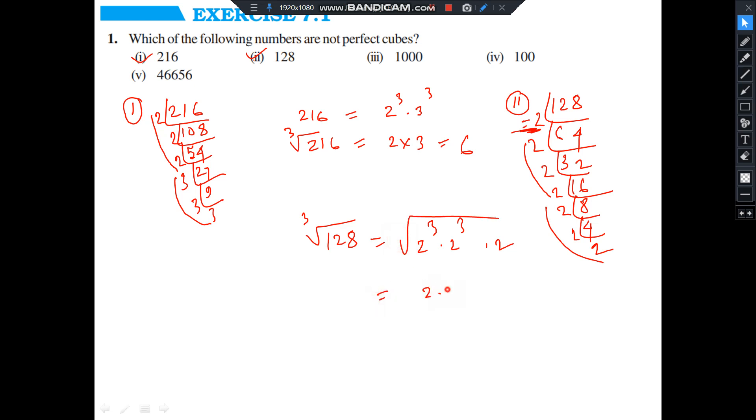That is equal to 2 into 2 and this one cube root of 2 will be there. So these 2 you are getting free but 1, 2 is stuck. So this is not, this number is not perfect cube. 128 is not a perfect cube number.